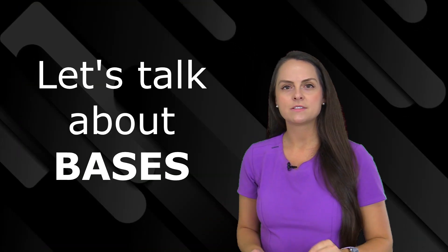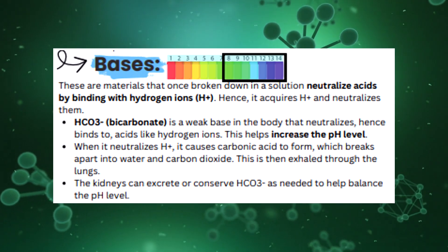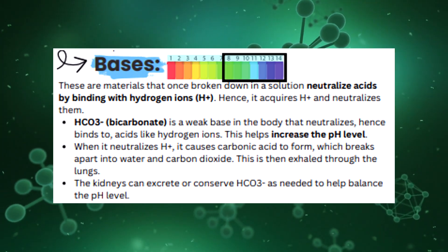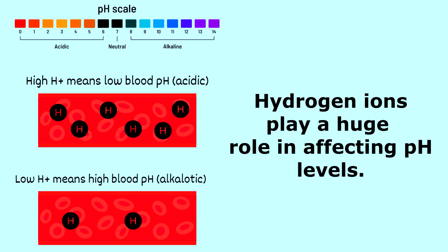To help us understand metabolic alkalosis a little better, let's talk more in depth about bases. Bases are materials that, once broken down in a solution, neutralize acids by binding with hydrogen ions — they acquire a hydrogen ion and neutralize it. Hydrogen ions play a big role in determining blood pH. Think of hydrogen ions as little acids in the body. When you have a high collection of them, it drops the blood pH and makes your body more acidic. But if you don't have a lot of hydrogen ions, like in metabolic alkalosis, it makes the body too alkaline and increases the blood pH.